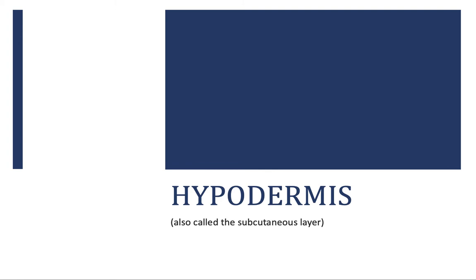Depending on the resource you're looking at, the hypodermis can be considered a third layer of the skin, or it can be separate from the skin if that resource only includes the epidermis and the dermis. So the hypodermis can either be the third layer of skin or separate from the other two layers, and it can be called the hypodermis or the subcutaneous layer. That might be the most complicated part of this screencast — the actual name and classification of the hypodermis.